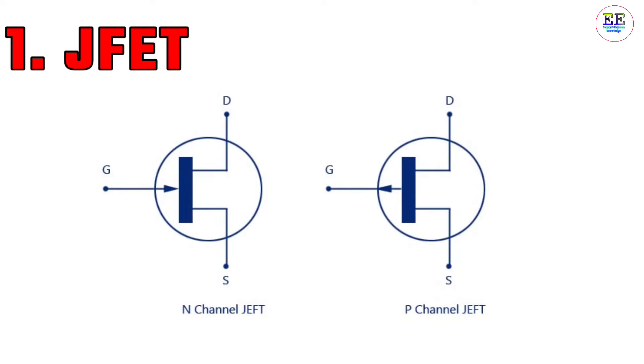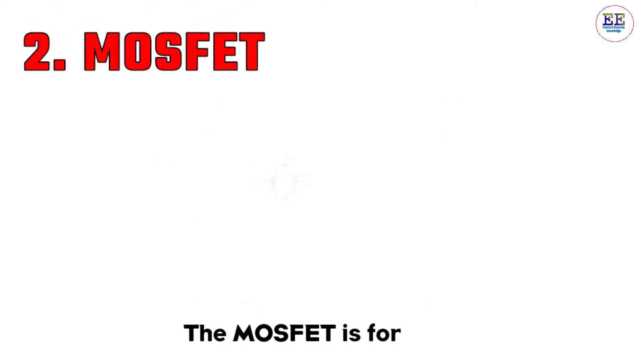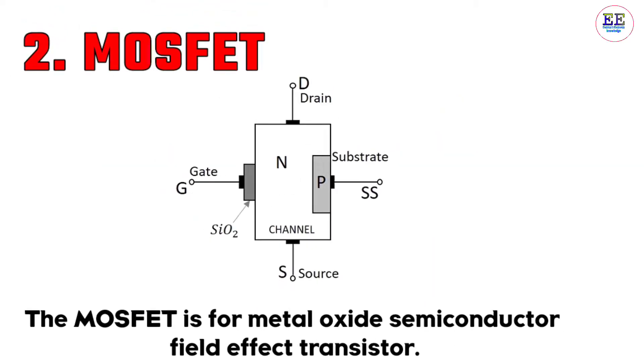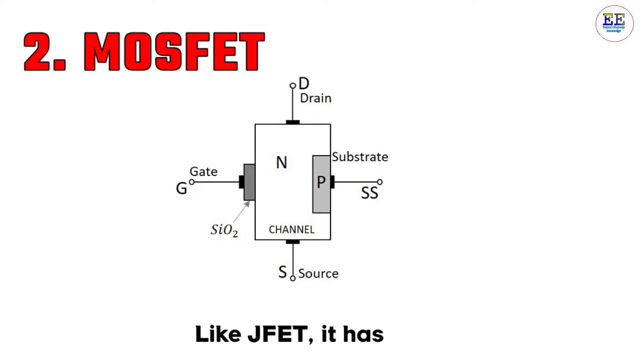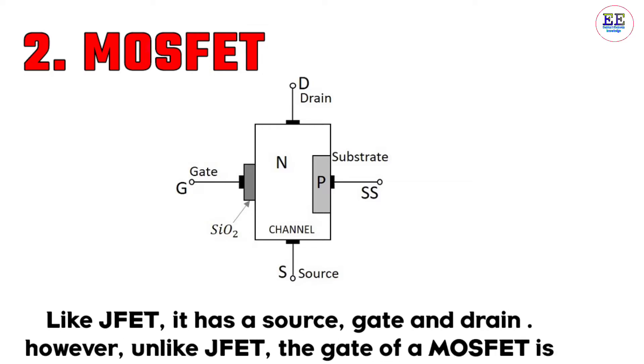The MOSFET is the metal oxide semiconductor field effect transistor. Like JFET, it has source, gate, and drain. However, unlike JFET, the gate of a MOSFET is insulated from the channel.